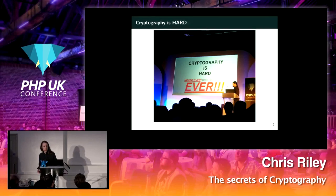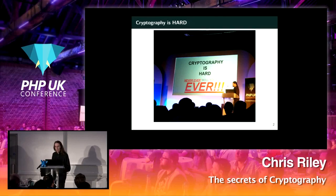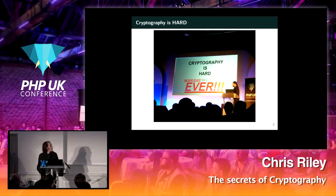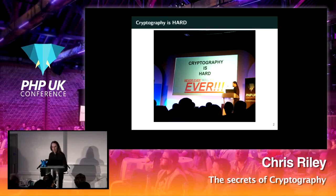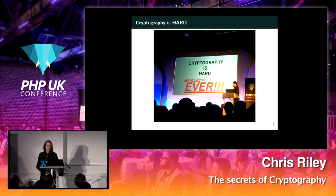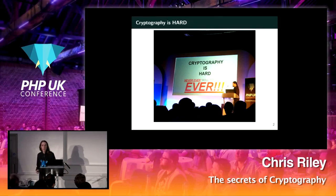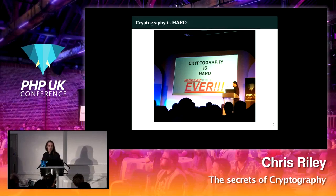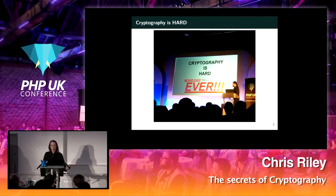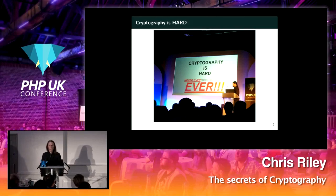Now if you've been to any other talks, maybe at this conference or another one, on application security, you may have seen a talk like this. Cryptography is really quite a hard thing to get right, especially if you start diving into designing your own algorithms. The main purpose of this talk is to take a brief journey through the evolution of cryptography, right from the very beginning all the way up to the algorithms we're using today, and give you an appreciation of quite why it's so hard and why it's important to get it right.